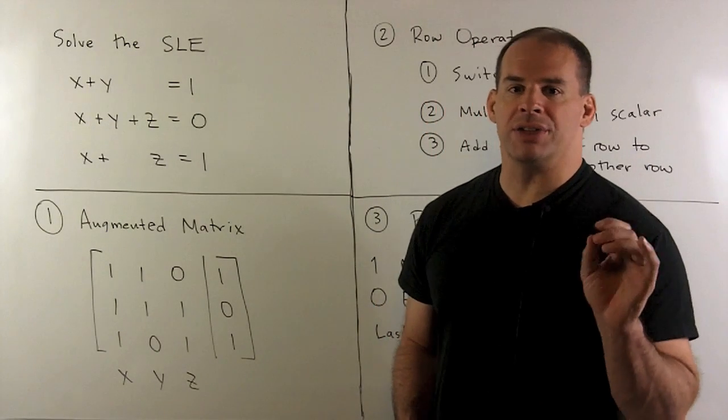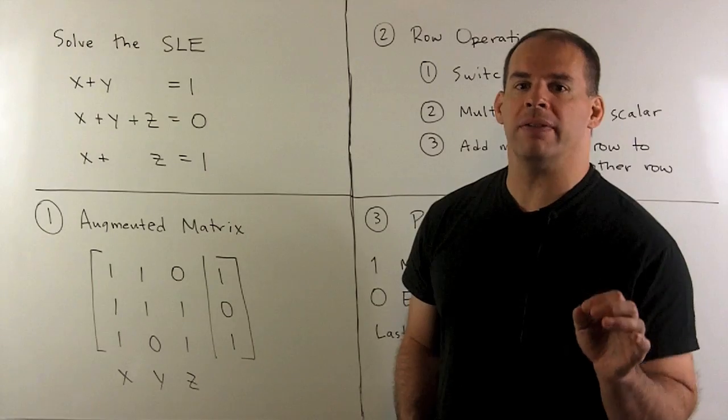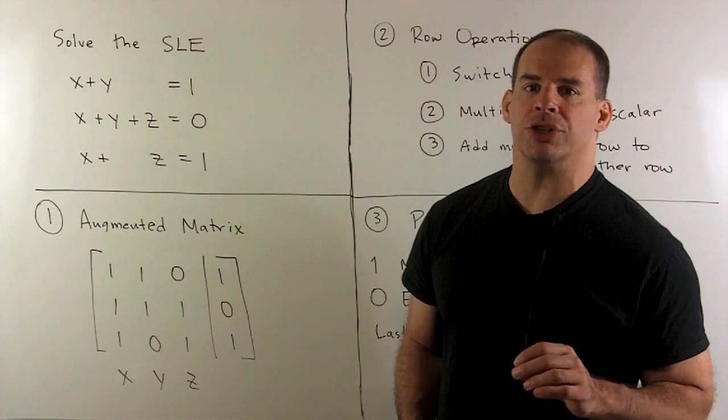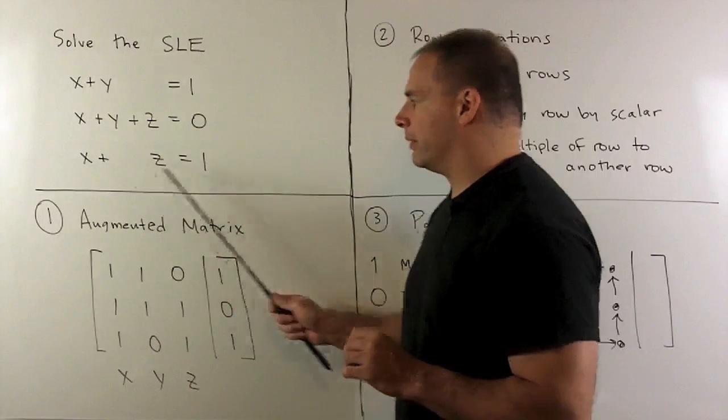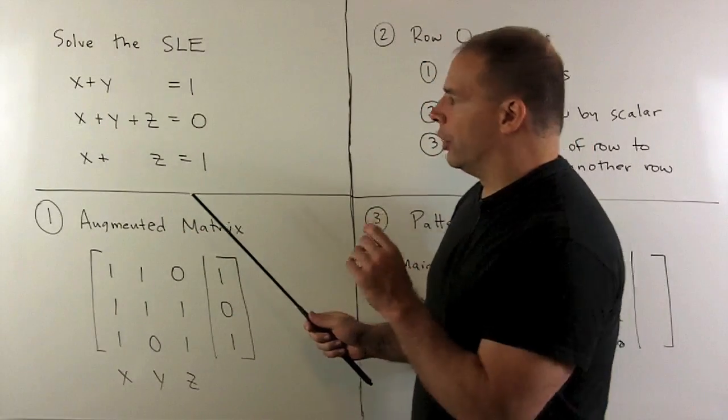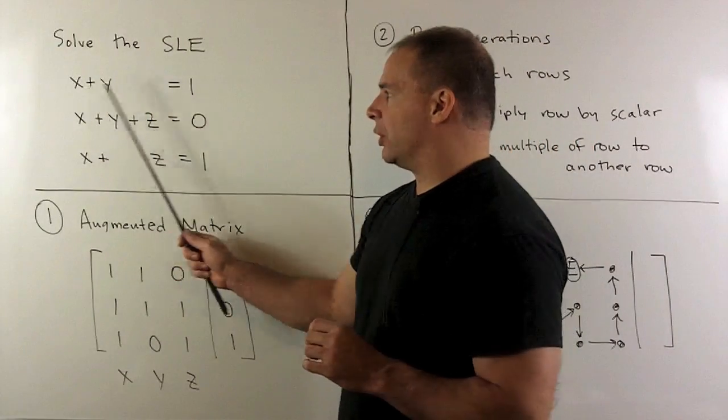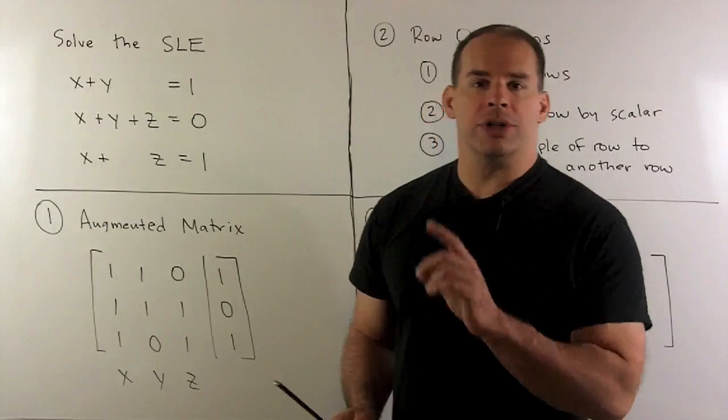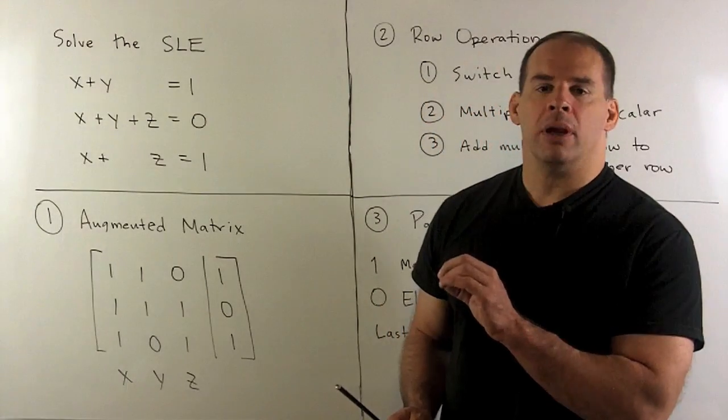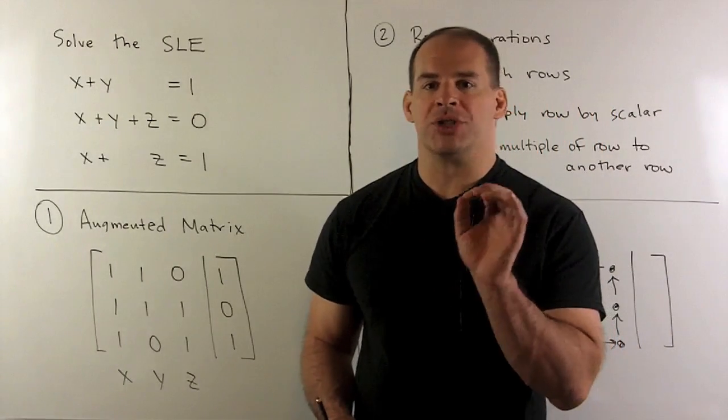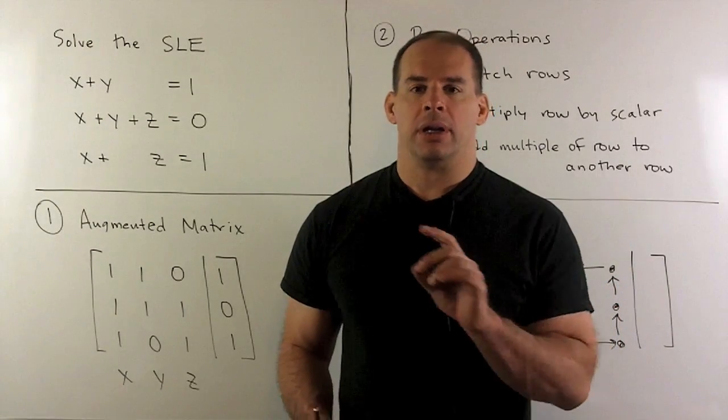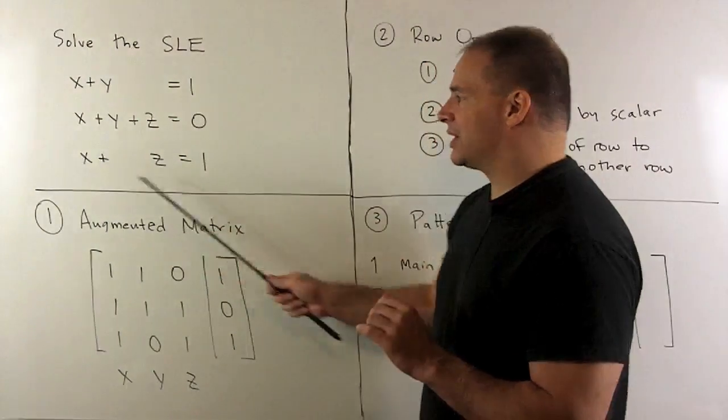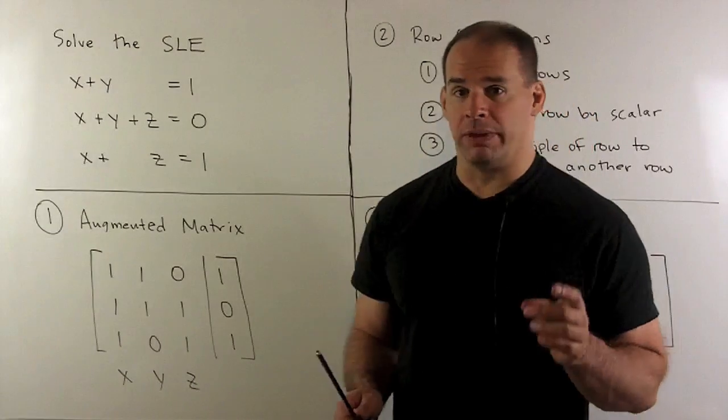Here's an example of solving a system of linear equations in three variables using row operations. Now, we have the following system of linear equations. You'll note the coefficients are all 0 and 1, so we could solve this by trial and error, but the point here is to give a procedure for using Gaussian elimination. Now, we want our first example to be as simple as possible without being trivial.